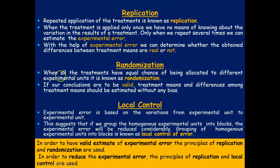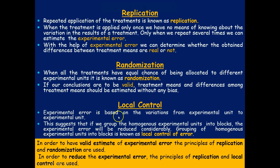Randomization is the random allocation of treatments — when all treatments have an equal chance of being allocated to different experimental units, it is known as randomization. For conclusions to be valid, treatment means and differences among treatment means should be estimated without any bias. Randomization is used to overcome human or subjective bias. Local control is based on the variation from experimental unit to unit.